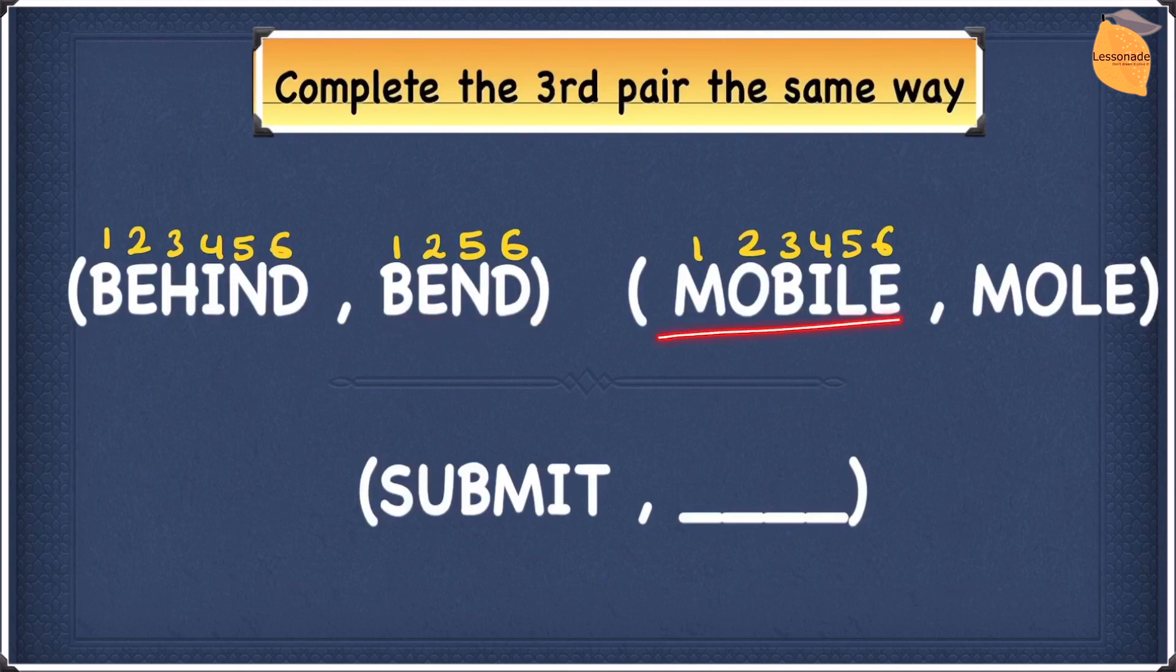Now, we are going to do the same thing for MOBILE and MOLE. Obviously, MOLE starts with M, and M is in the first position. We can write 1. O is in the second position. We can write 2. And then L is in the fifth position. We can write 5. And finally, E is in the sixth position. We can write 6.